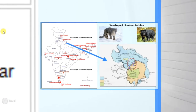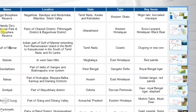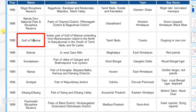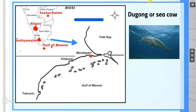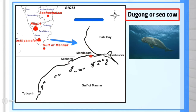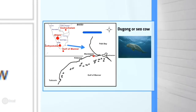Next is Gulf of Mannar Biosphere Reserve. It is located in Tamil Nadu. On the map it is clearly shown where it is located. The key fauna found here is the Dugong, also known as the Sea Cow.